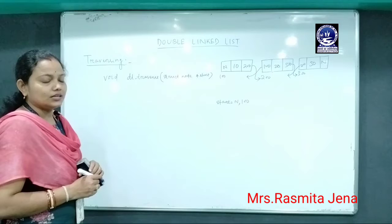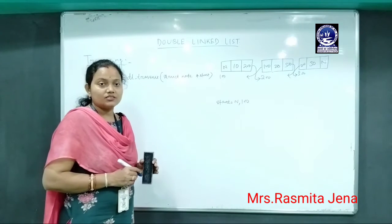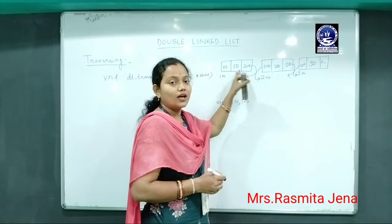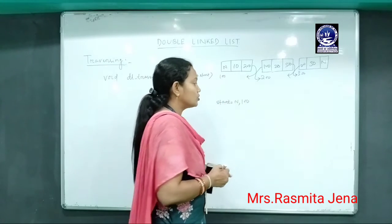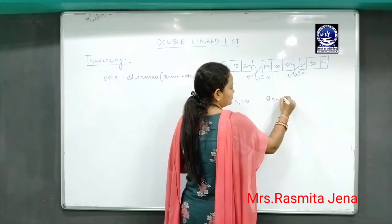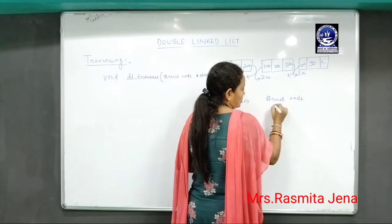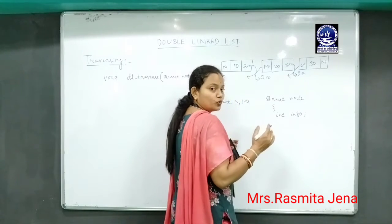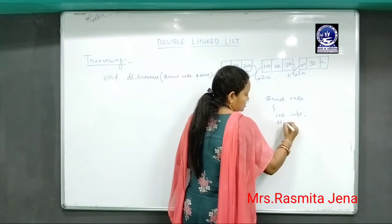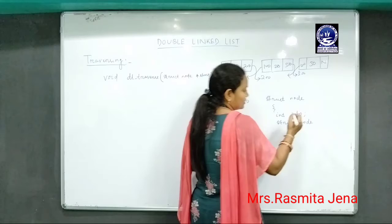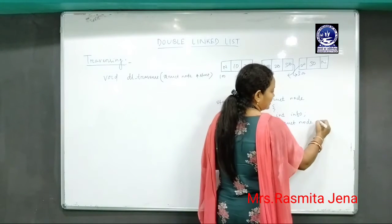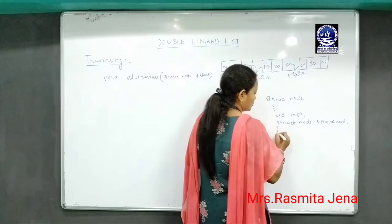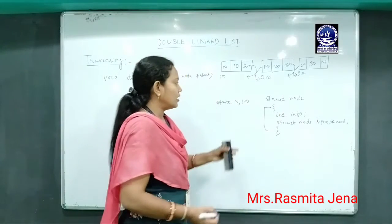Before we go for traversing, we must know about the node structure in a double linked list. As you can see, every node has a pre-part and a next-part. The structure is: struct node, with the data part stored in the variable info, and two address parts stored by two pointers — one is a pre-pointer and another is a next-pointer. This is the structure of the node.